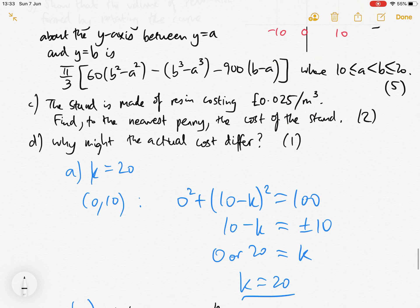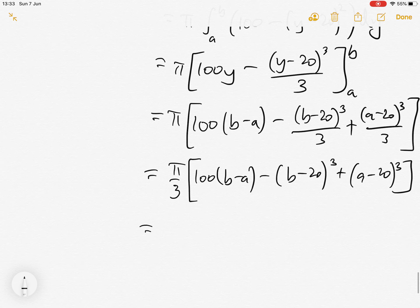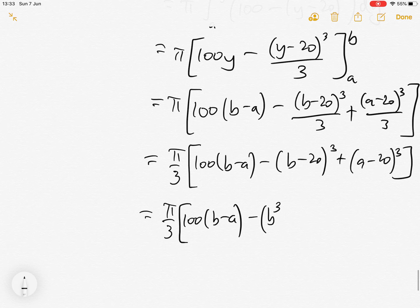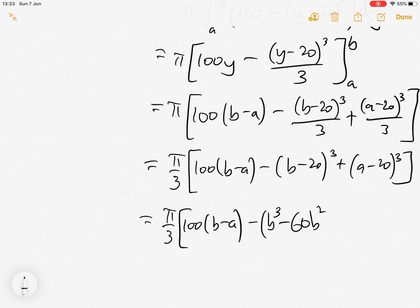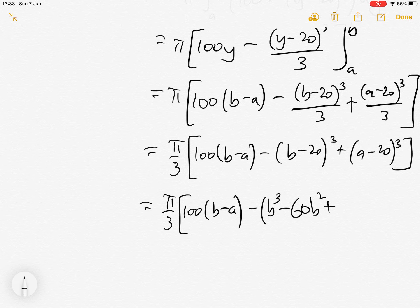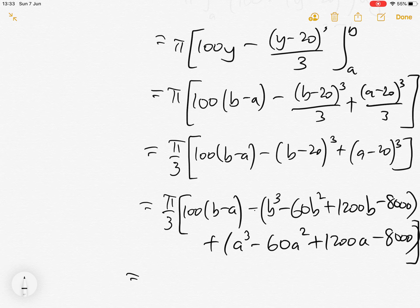Now if we expand b minus 20 cubed and a minus 20 cubed using the binomial theorem, we've got minus b cubed minus 60 b squared plus 1200 b minus 8000, then plus a cubed minus 60 a squared plus 1200 a minus 8000. The two 8000s cancel out because there's a minus in front of the bracket.